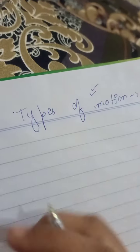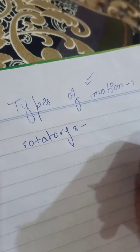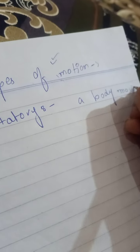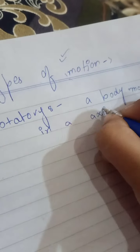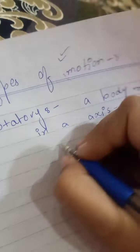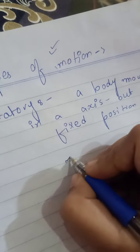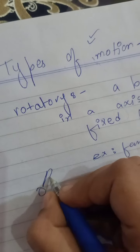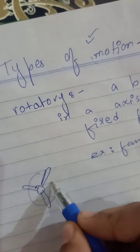Motion has three types. The first type is rotatory motion. Rotatory motion means a body moving on an axis but in a fixed position. A good example is a fan — you can see that the fan is moving on its axis.